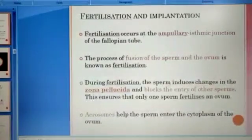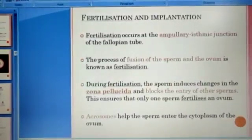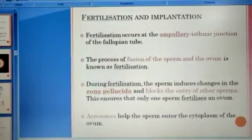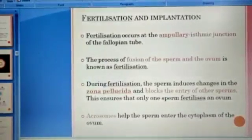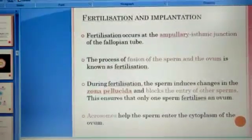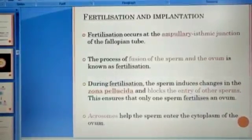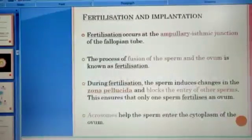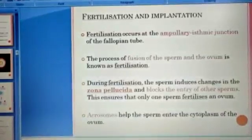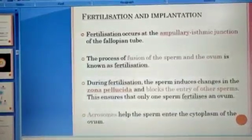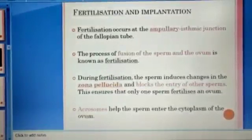First, recall what is meant by fertilization. Fertilization is nothing but the fusion of male and female gametes. Where does fertilization take place? From Class 11, you know there are two types: internal fertilization and external fertilization. Fertilization inside the female body is internal; outside the body it is external. Human beings are classified under internal fertilization.